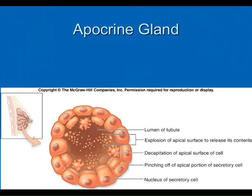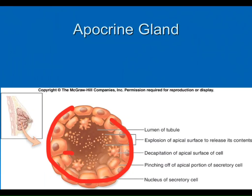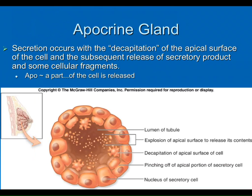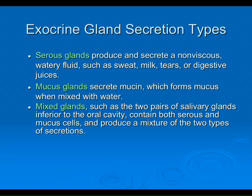Apocrine is the intermediate type — this is how breast milk is released from the mammary glands. The cells at the end of the cul-de-sac pinch off the apical portion of the cell — the part facing the lumen — releasing it. The cell is kind of 'decapitated' at its apical portion. So you decapitate just the apical portion of the cell — that's how milk is released. So the three secretion types are merocrine, holocrine, and apocrine.